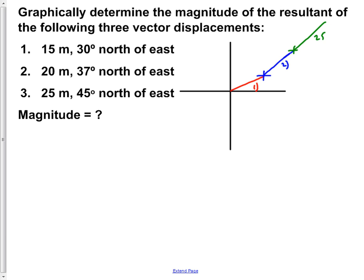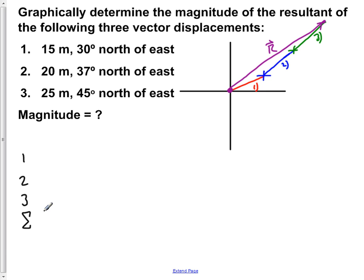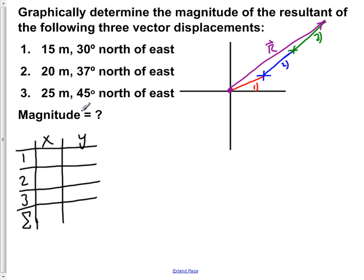This up here corresponds to vector three. Now in order to find the resultant — the point that connects here and here — this is our resultant vector. We have to add up the components of one, two, and three. So we need all of the x components and all of the y components. We set up a table with vector one, vector two, vector three, and their sum, listing the x and y components of each.